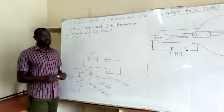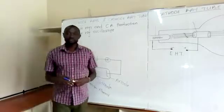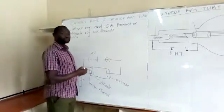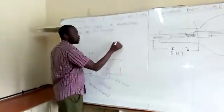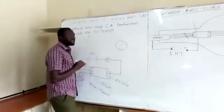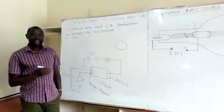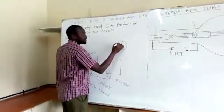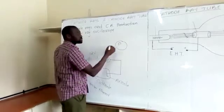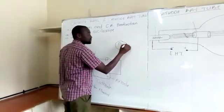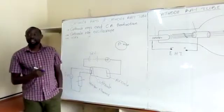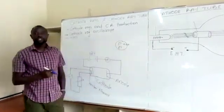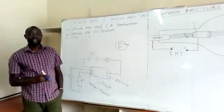I'll take you back a little to your chemistry and look at an atom. We know in an atom we have the inner part, that is the nucleus. And in the nucleus, we have two particles: the protons, which carry a positive charge — they are positively charged — and we have neutrons, which are neutral. They don't carry any charge.